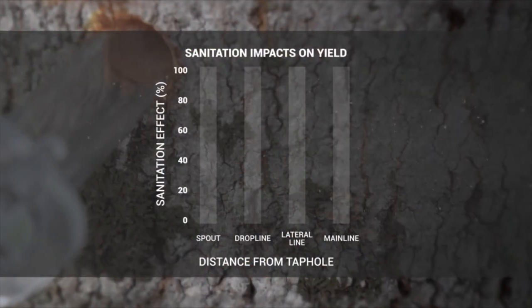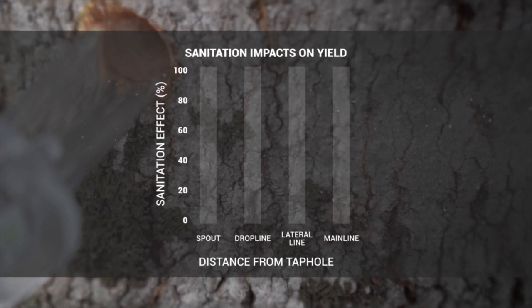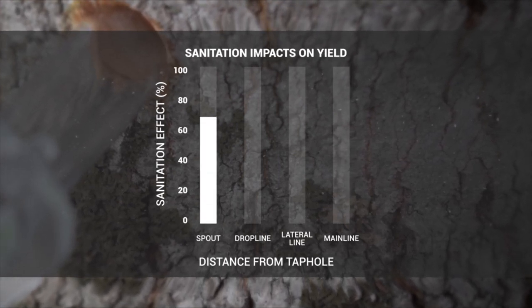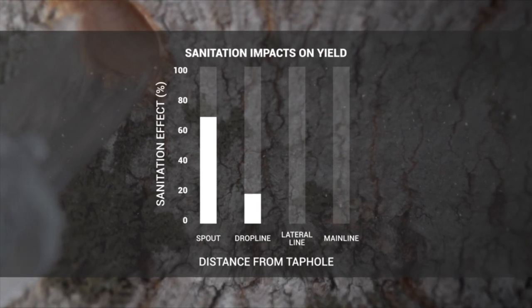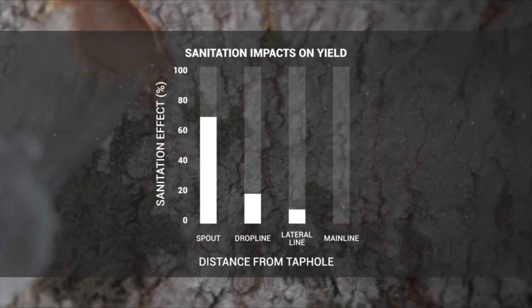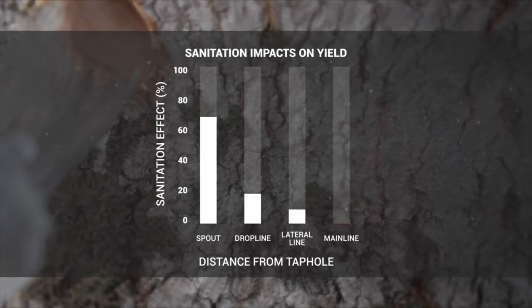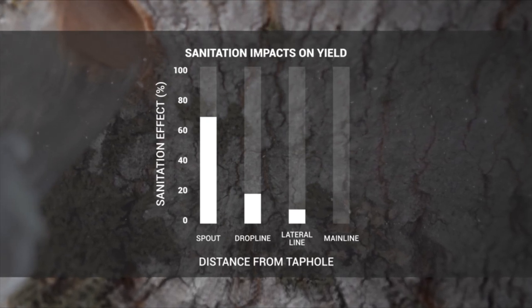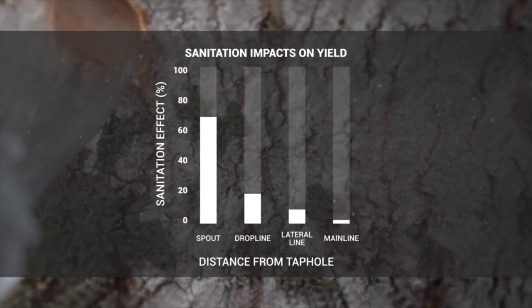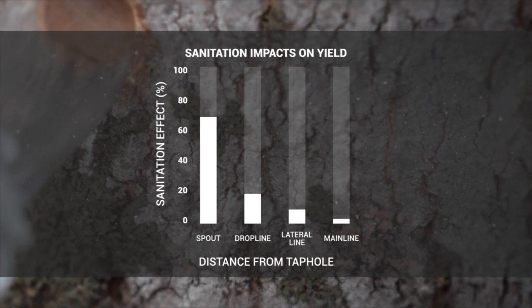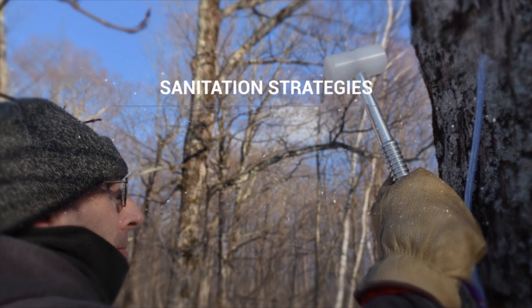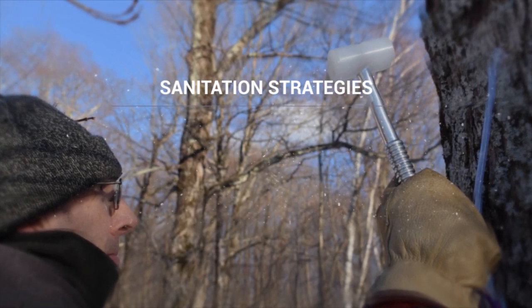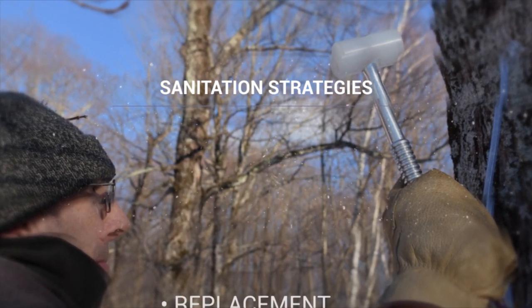The closer something is to the taphole, the more important sanitation becomes. The spout accounts for about 70% of the total sanitation. Drop lines account for about 20%. The influence of sanitation on the lateral line is approximately 10%, and main line sanitation has little influence on yield — less than about 3%.